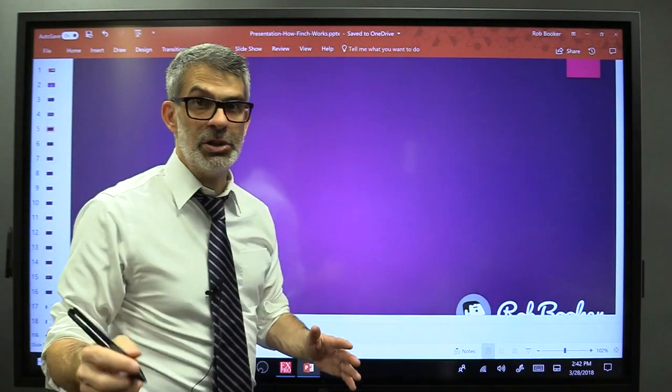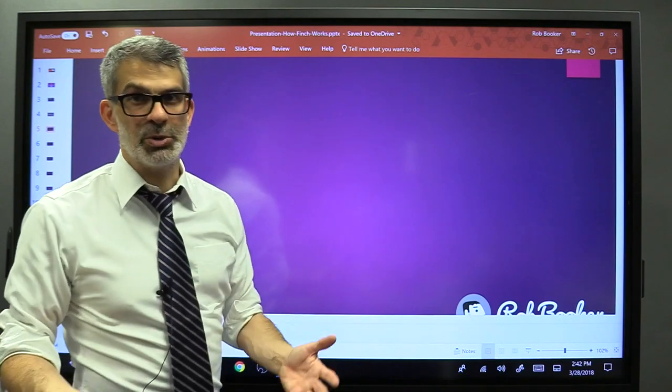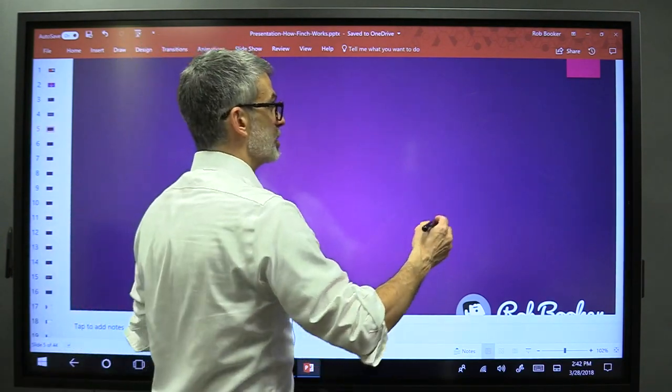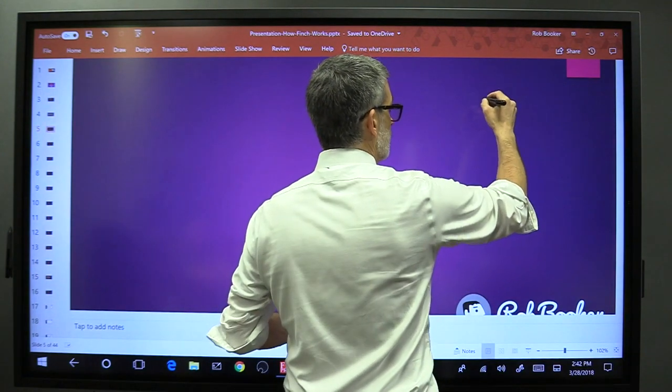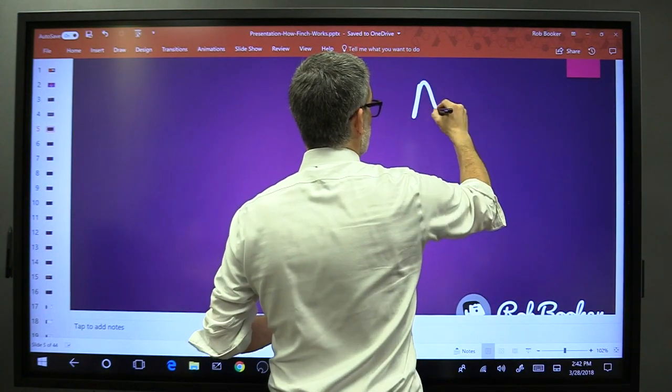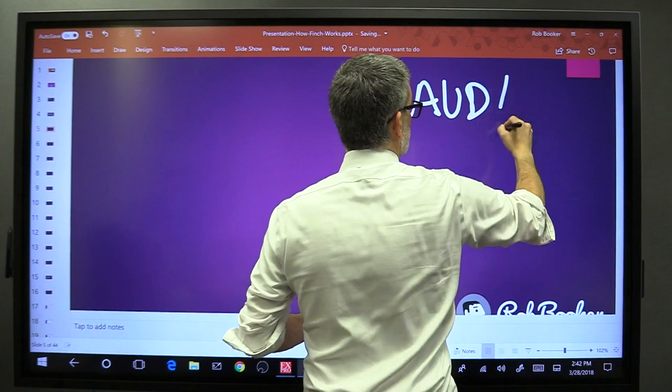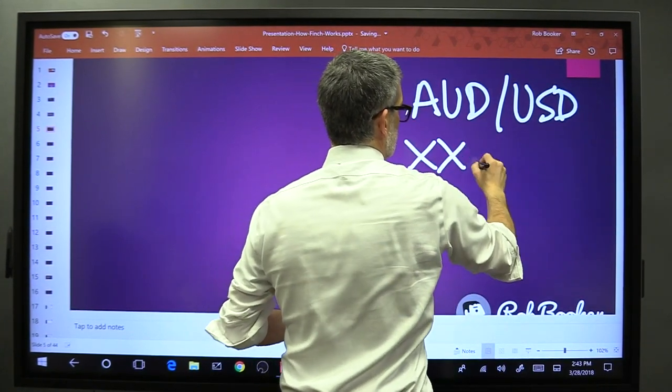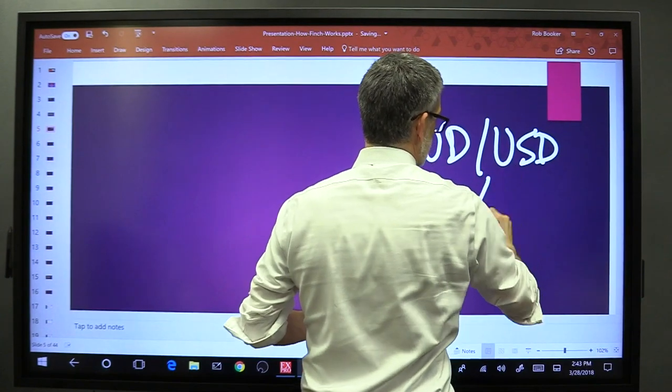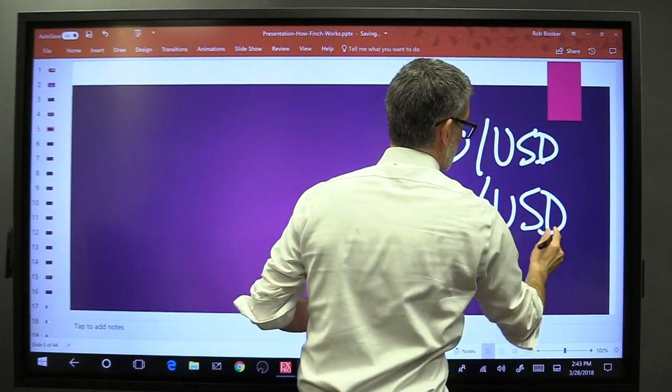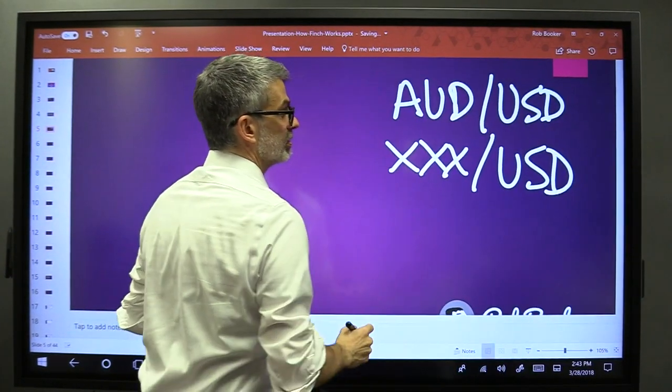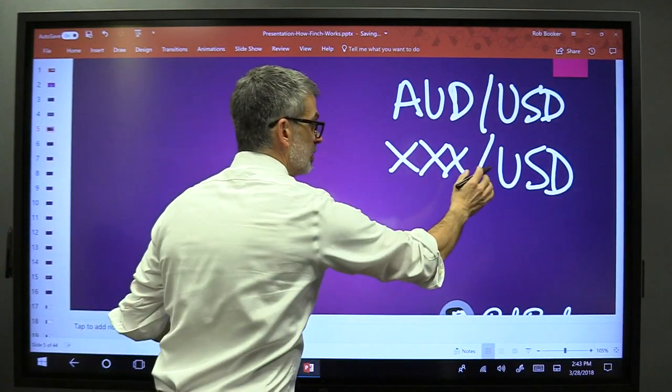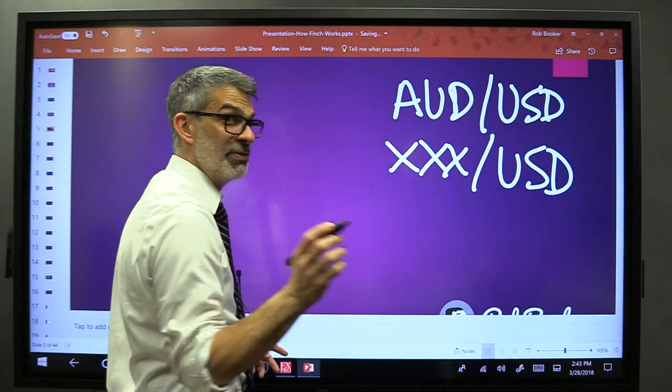So on the Euro-US dollar, the British pound-US dollar, the Australian dollar slash US dollar, are you seeing a pattern here? For the Australian USD and everything else against the US dollar, for all of those, every time you see Australian dollar US dollar, British pound US dollar, Euro US dollar,